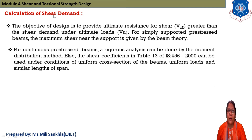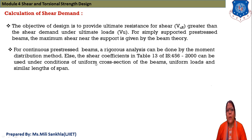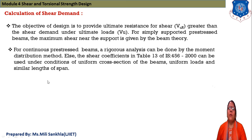To prevent cracks we find the shear demand in our beam. The objective of design is to provide ultimate resistance for shear: VuR (ultimate resistance) must be greater than the shear demand Vu. For a simply supported pre-stressed beam, maximum shear near the support is given by beam theory. For a continuous pre-stressed beam, analysis can be done using Table 13 of IS 456:2000, where shear coefficients are given based on cross-section, uniform load, and span length.